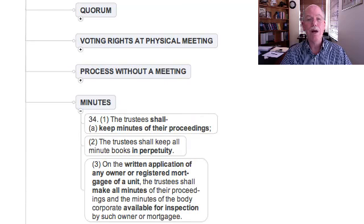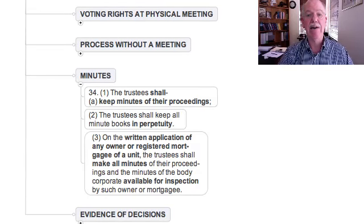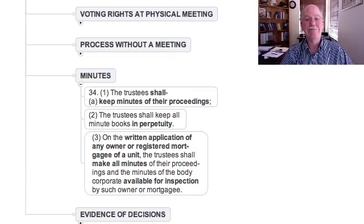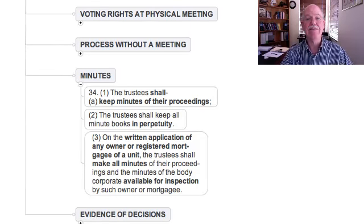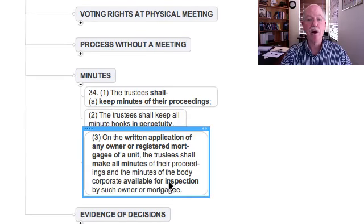Once a decision has been made, the trustees are obliged to keep minutes. If the decision was taken in writing, that document is the evidence. If they sat at a meeting and made a decision, they've got to write it down — they've got to record the text of that resolution — and they've got to keep the minute books including the text of all their decisions in perpetuity. If any bondholder or owner asks in writing for a copy, they've got to supply it and make it available for inspection by that person.